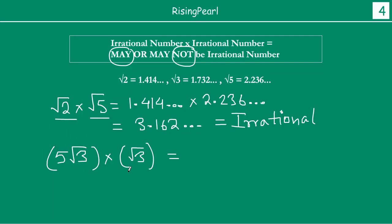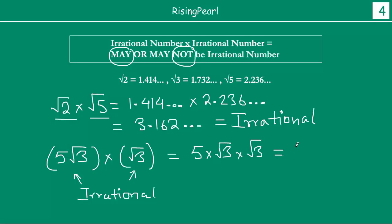In this example, we are taking an irrational number and multiplying it by another irrational number. So this means 5 multiplied by √3 multiplied by √3. Since √3 × √3 = 3, this gives us 5 × 3 = 15.